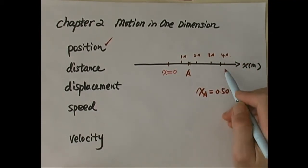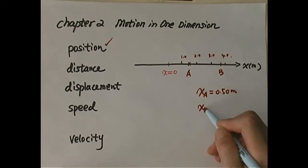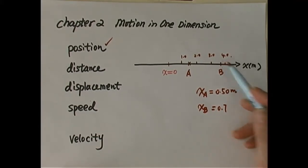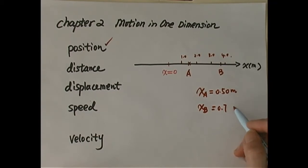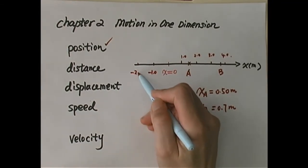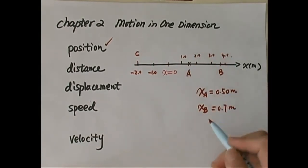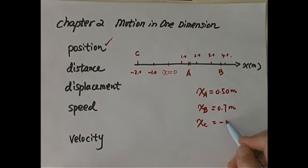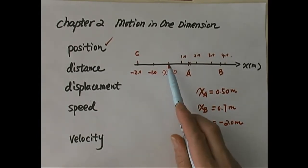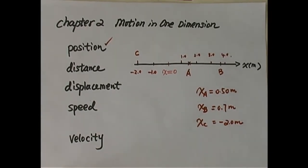If we choose another position B, x of B looks like it's 70% of the way between 3.0 and 4.0 — let's assume that is 0.7 meters. Since this is roughly estimated, 7 is a one-digit significant figure. For a third position C, marked on the negative side, x of C is negative 2.0 meters. Positive means on the right side of x equal to zero, and negative means on the left side of the origin.